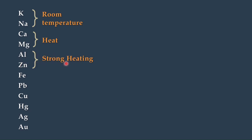Aluminium and zinc require strong heating to form their oxides. Zinc plus oxygen on strong heating gives zinc oxide; similarly, aluminium plus oxygen on strong heating gives aluminium oxide.